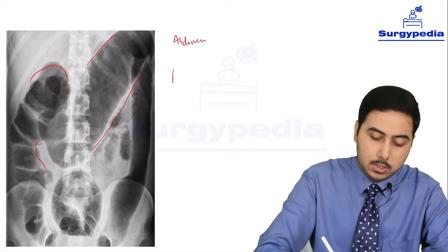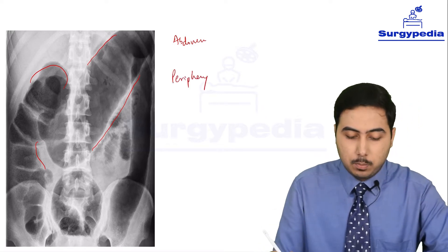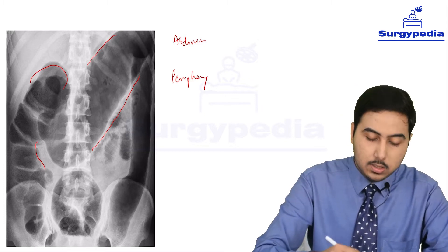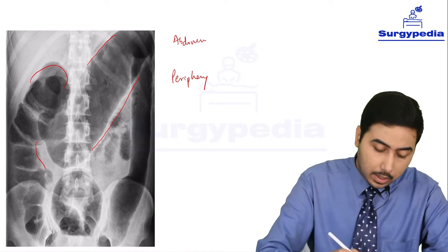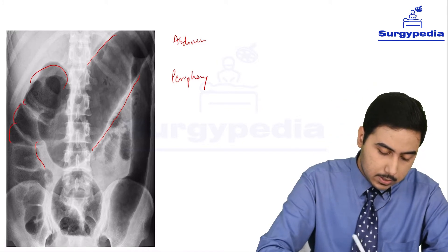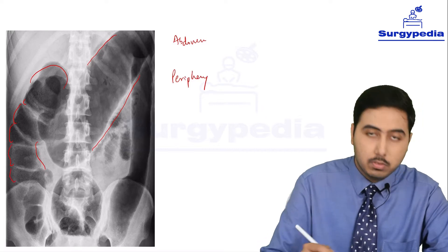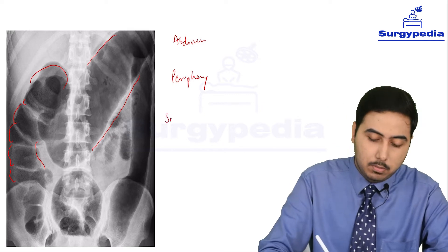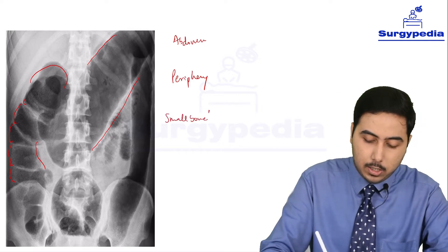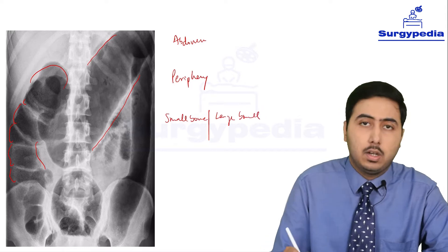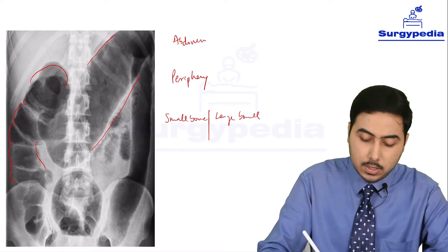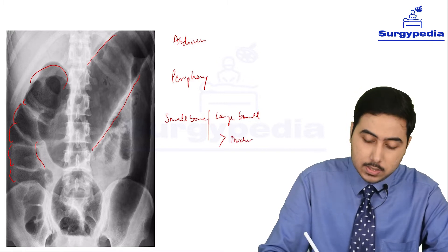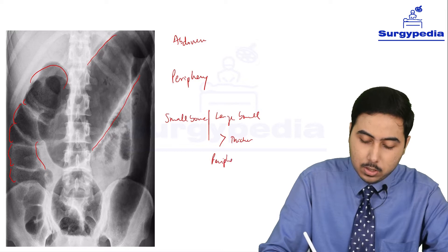It is present in the periphery. So this is one point. In our previous module, in part 1, we discussed the difference between small bowel and large bowel obstruction. The important points are that large bowel has a thicker diameter and it is present in the periphery, not in the center.